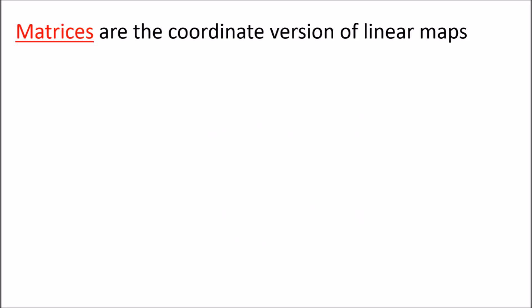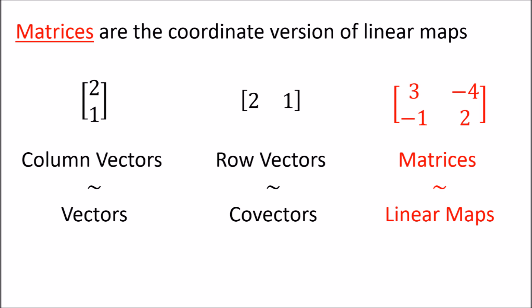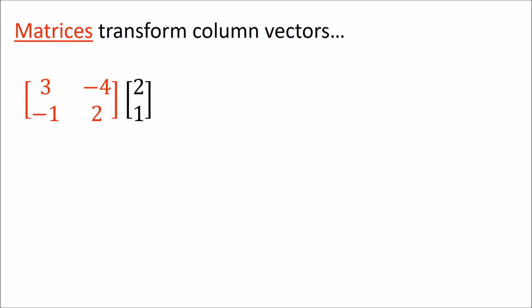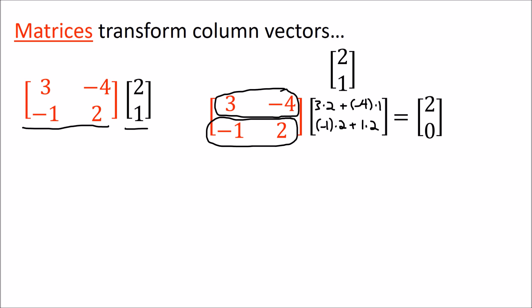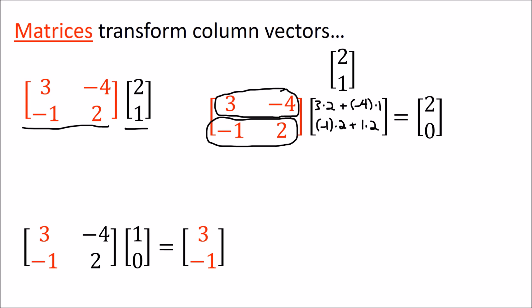The coordinate representation of linear maps ends up being matrices — a two-dimensional array of numbers. Just as column vectors are the coordinate representation of vectors, and row vectors are the coordinate representation of co-vectors, matrices are the coordinate representation of linear maps. Here we have a two-by-two matrix acting on a two-by-one column vector, and we determine the output vector using the standard matrix multiplication rules: we take the dot product of the column vector with each row of the matrix.